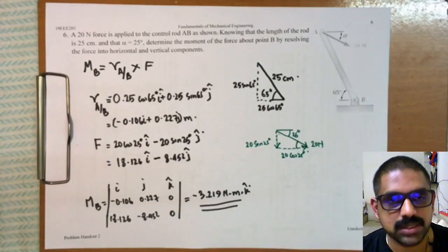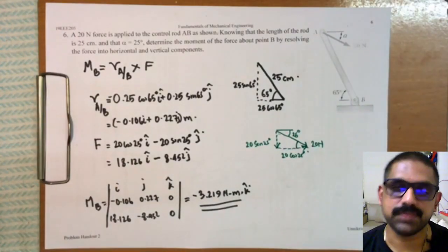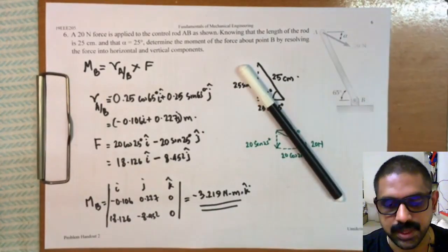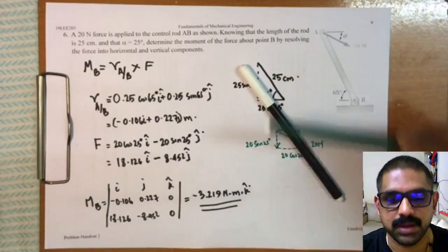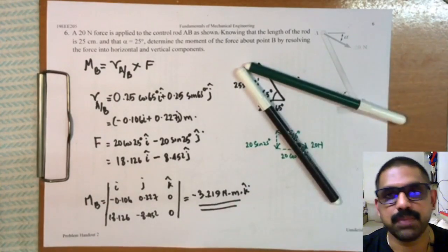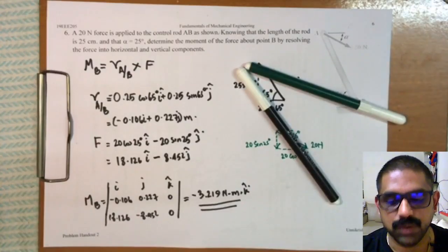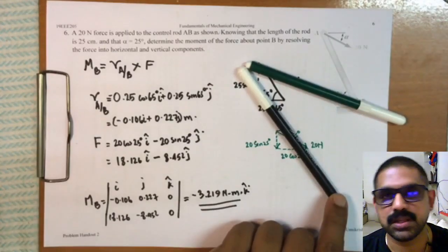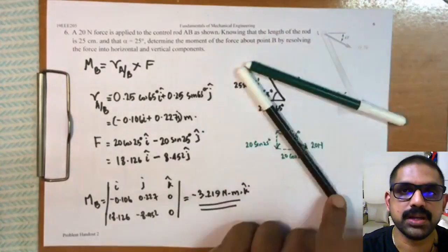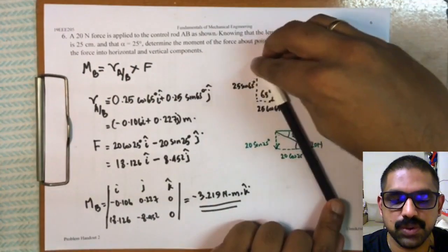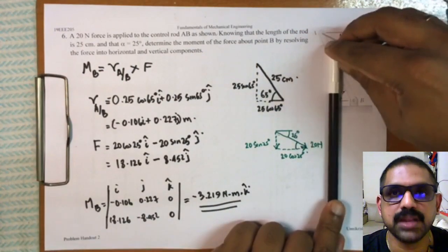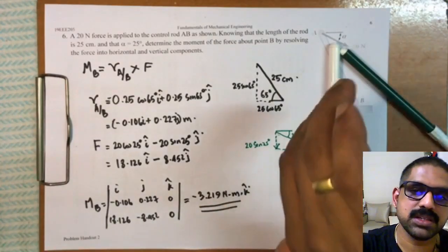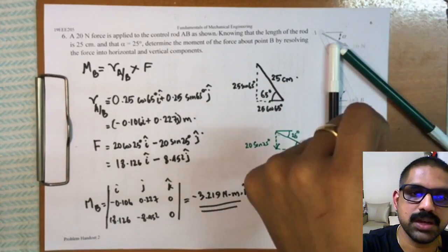Now let us check whether our answer is correct or wrong. Let us assume this pen to be the lever AB, and this green pen to be the force acting at point A. Now the bottom point of the pen, let me consider that as point B, and the top point is point A. So if I apply a force in this way, the pen tends to rotate in the clockwise direction, and if I curl my fingers in the clockwise direction, my thumb points downward. So that means my answer of minus is correct.